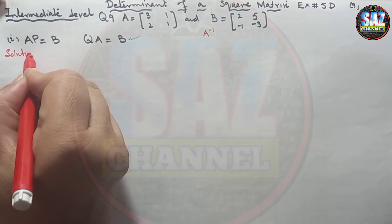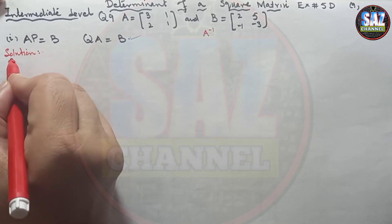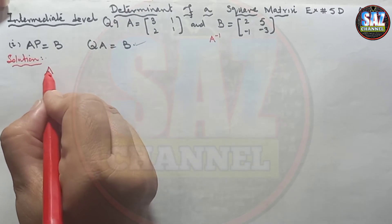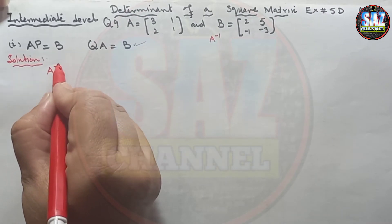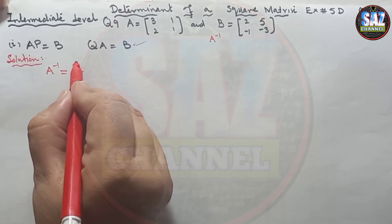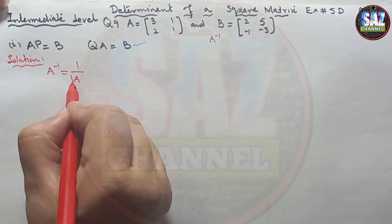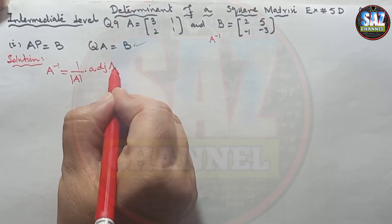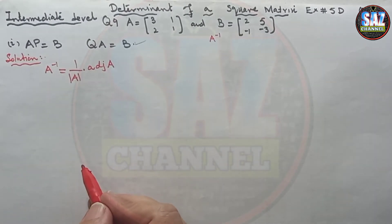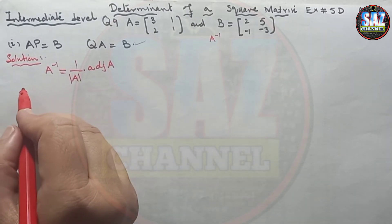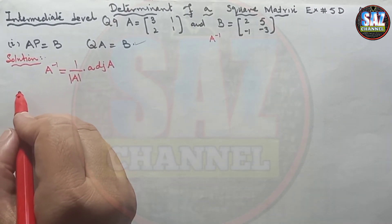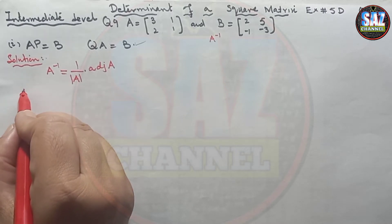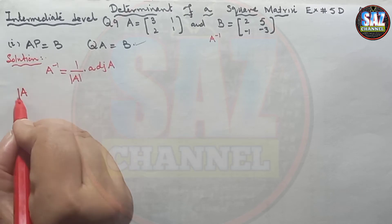Recall the formula for the inverse of any matrix: A⁻¹ = (1 / det(A)) × adj(A). What we have to do first is find the determinant and check whether it is zero or not, because if it equals zero we cannot find the inverse.